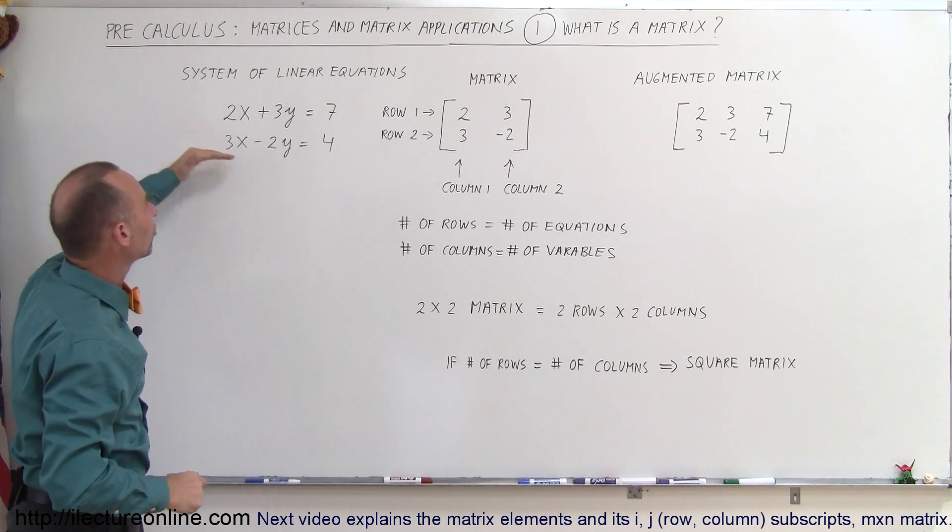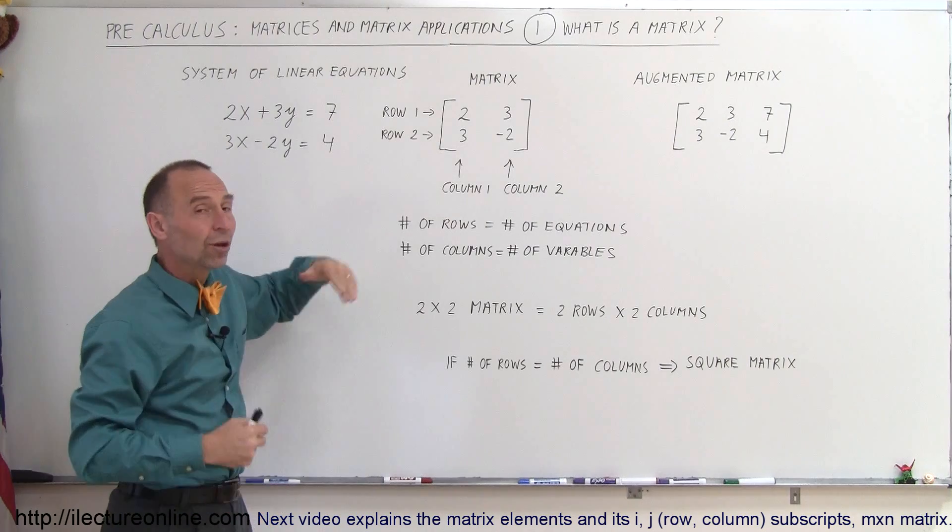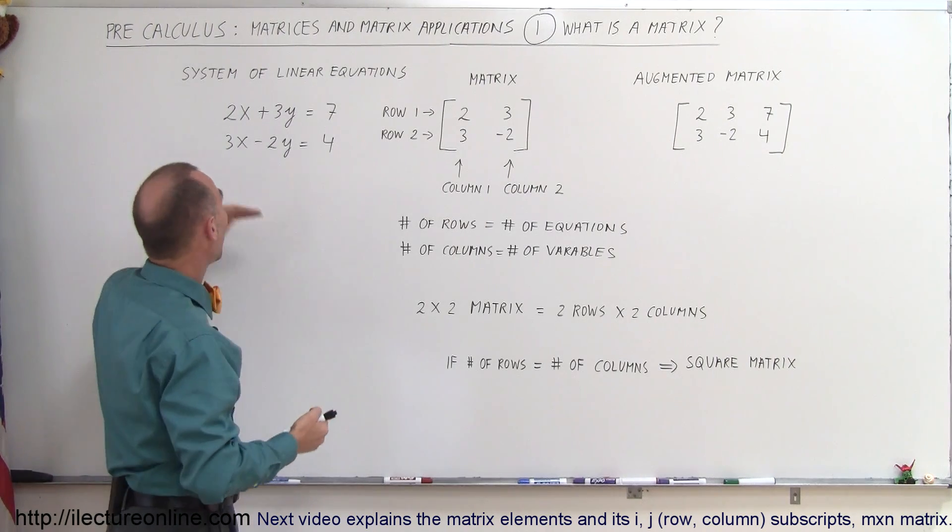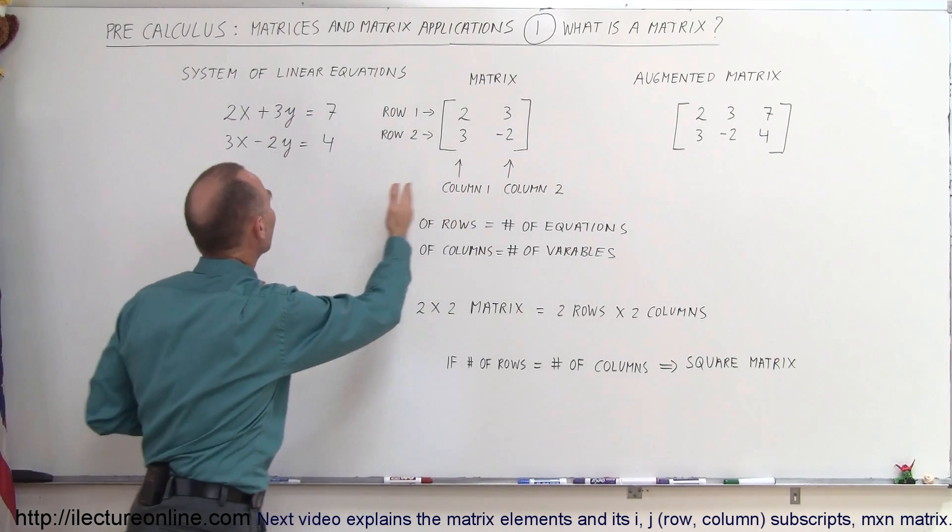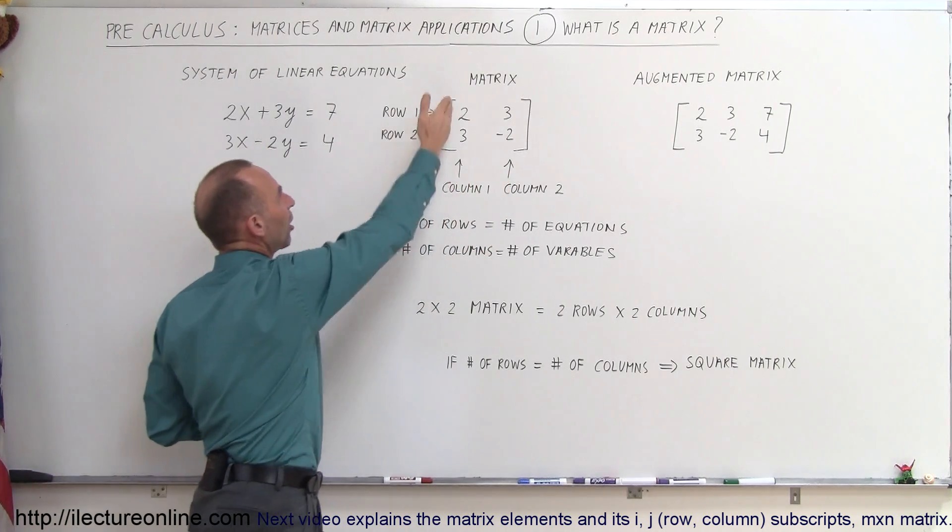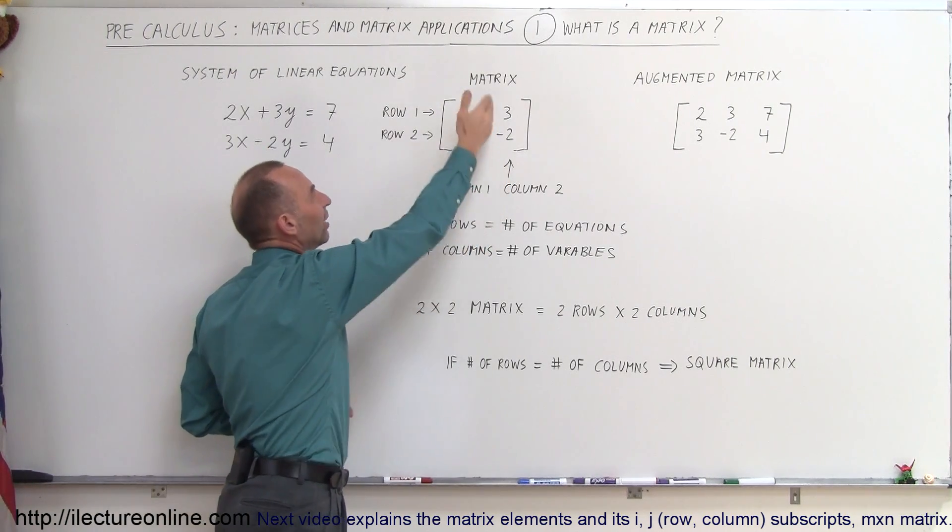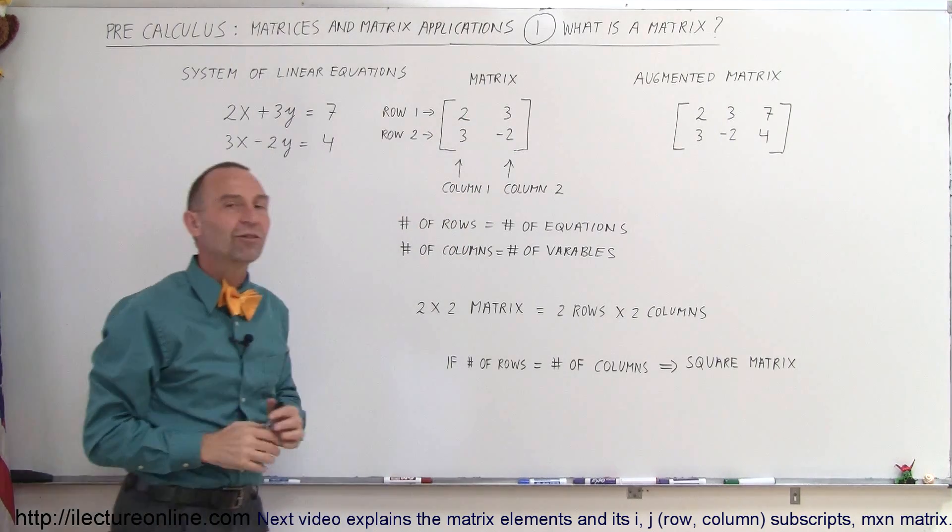Also notice, since there's two equations, there's going to be two rows. The number of rows equals the number of equations in the system, and the number of columns represents the number of variables. The first column represents the variable x and the second column represents the variable y.